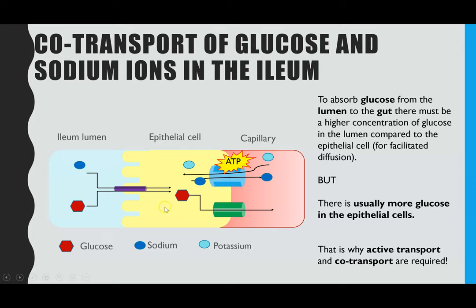The reason active transport or co-transport is required here relates to the concentration of sodium ions within the epithelial cells — the layer of cells lining the walls of the small intestine, the ileum. Those epithelial cells usually have a really high concentration of glucose. So as digested food flows through the lumen of the ileum, you do not have a high-to-low concentration gradient to enable facilitated diffusion. Instead, absorption of glucose has to be through active transport to move glucose against its concentration gradient. The type of active transport used is co-transport.